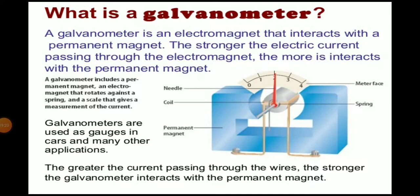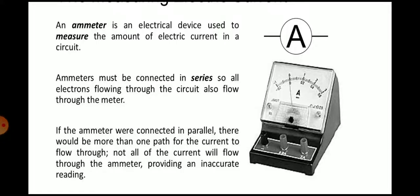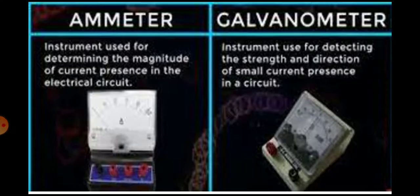An ammeter is a current-measuring device and must be connected in series. A galvanometer is a voltage-measuring device.